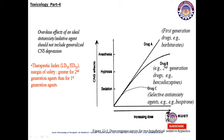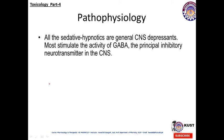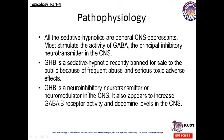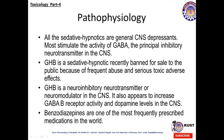The dose-effect of an ideal anti-anxiety sedative agent should not include generalized CNS depression. Therapeutic index should be at least 50 to 80, with a margin of safety greater for second-generation agents than first-generation. Pathophysiology: all sedative hypnotics are generally CNS depressants. Most stimulate the activity of GABA, the principal inhibitory neurotransmitter in the CNS. GHB is a sedative-hypnotic recently banned for public sale due to frequent abuse and serious toxic adverse effects. GHB acts as a neuroinhibitory neurotransmitter and neuromodulator in the CNS, and appears to increase GABA-B receptor activity and dopamine levels.